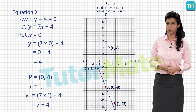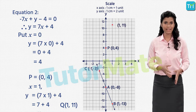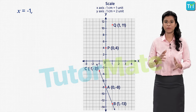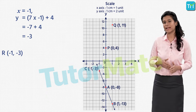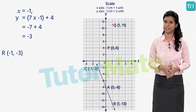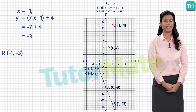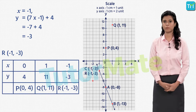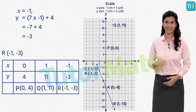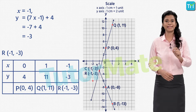When x is equal to 1, we get y equal to 7 into 1 plus 4, which is 7 plus 4, that is 11. So the next point is 1 comma 11 — we plot it and name it Q. Taking x as minus 1, we get y equal to 7 into minus 1 plus 4, which is minus 7 plus 4, equal to minus 3. Our third point is minus 1 comma minus 3, named R. Joining the plotted points P, Q and R gives us another straight line. Let's extend this line on both sides.